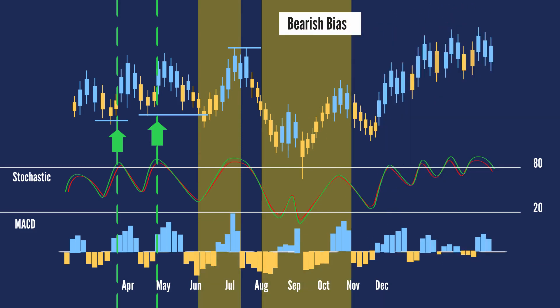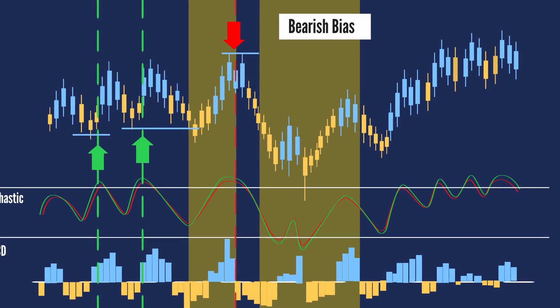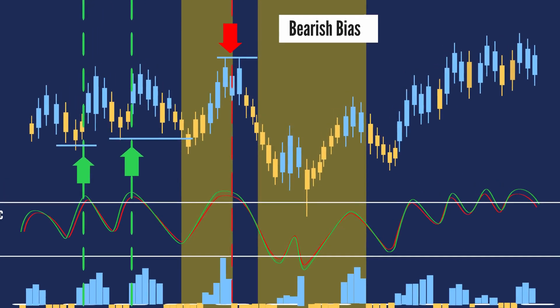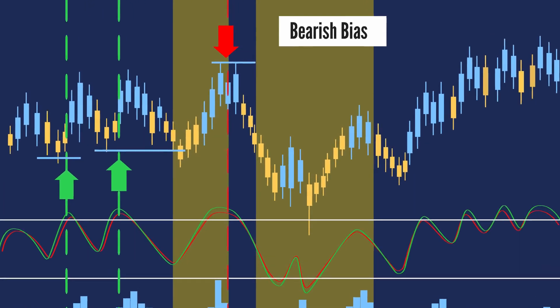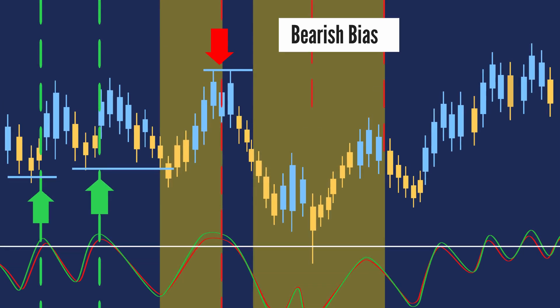A bearish bias started in June, with a bearish signal in mid-July occurring just before the bias switched to bullish. This was a tricky signal, but chartists setting a stop loss at resistance would have remained in the position and caught the big decline. After a couple more whipsaws, the strategy triggered a nice bullish signal in early December.